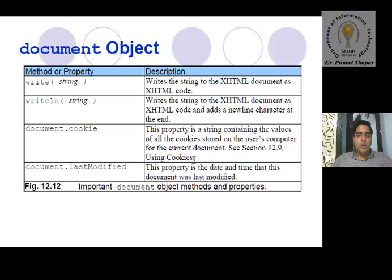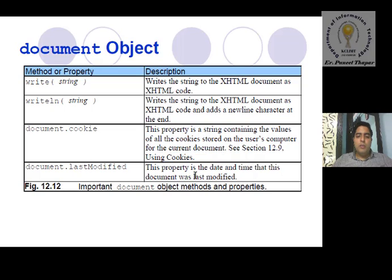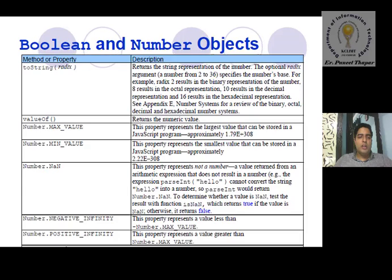On the topic of cookies: the document cookie object is used to generate and save cookies — they are saved within this document object. And document.lastModified is a property that gives the date and time when the document was last modified, allowing us to check when it was last changed.